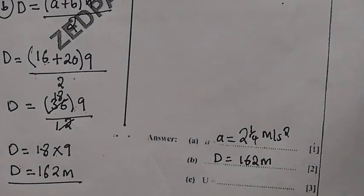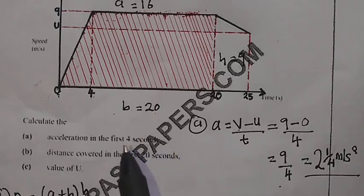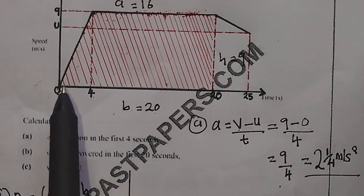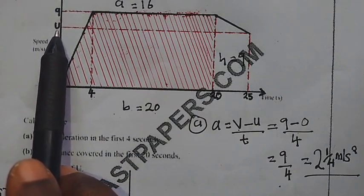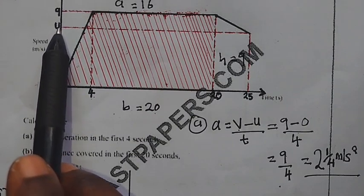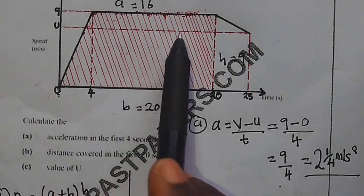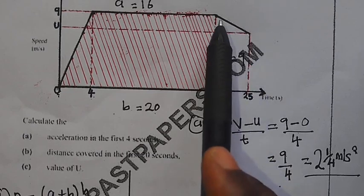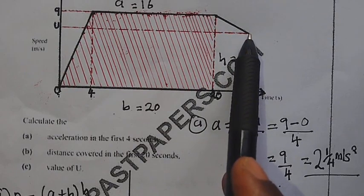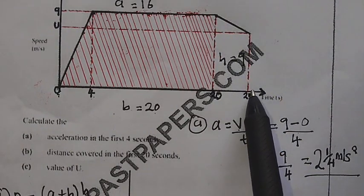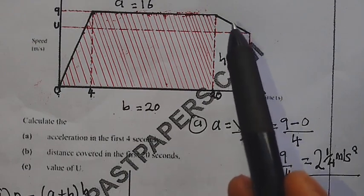Let us now go back to the last question. We have answered A and B. Let us now come to question C: calculate the value of U. When you look at where U is, it's on the speed axis. They want you to find the value of this U. The sprinter is decelerating here. We are going to consider this shape — this is the shape we are going to consider.